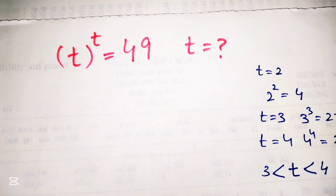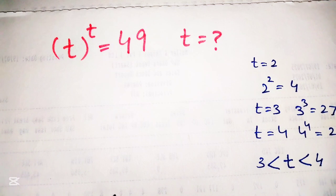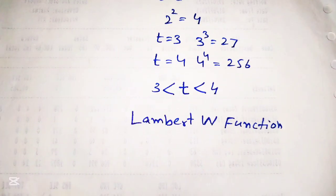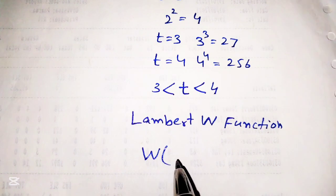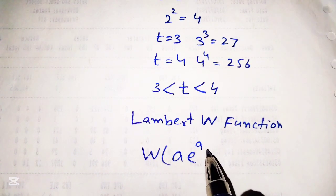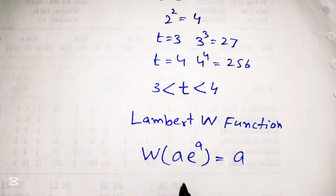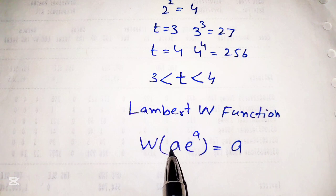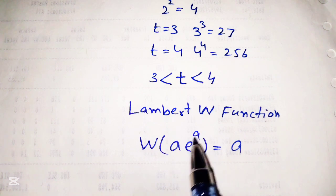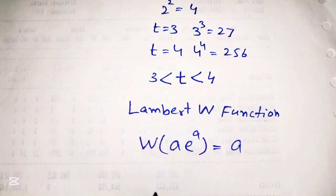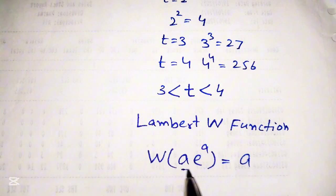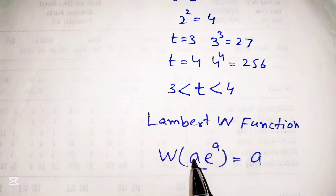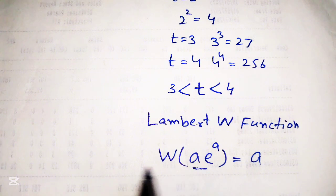To find the exact value of t we will use the Lambert W function, which is defined as: W of a times e raised to the power a is equal to a. That is, if e has the same power and the same coefficient multiplied with it, then its W will equal that power or coefficient a. We will convert our equation into this form.